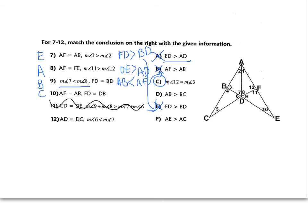For example twelve: we're told AD equals DC, and we're given angles. BD is congruent to itself, so I'm looking at triangles ADB and DCB. Angle 6 is smaller than angle 7, so the side across from angle 6 — which is BC — is going to be smaller than the side across from angle 7, which is AB. The reverse direction is answer D.